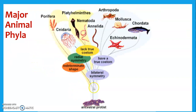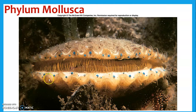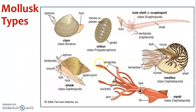Moving on up — we now have bilateral symmetry, and we have finally developed a true coelom, a body cavity. So we've knocked out the worm phyla. Now we're going to quickly knock out arthropods and mollusks, starting with mollusks. Mollusks are basically clams — bivalves — but it also includes gastropods like snails, cephalopods like squid and octopi, and the nautilus.